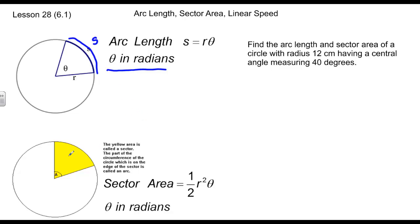When we talk about sector area, we talk about a piece of the circle, and its area from the center out relative to a central angle. So this whole shaded area is the sector. This area is found by taking one-half r squared theta. Once again, theta is in terms of radian values.